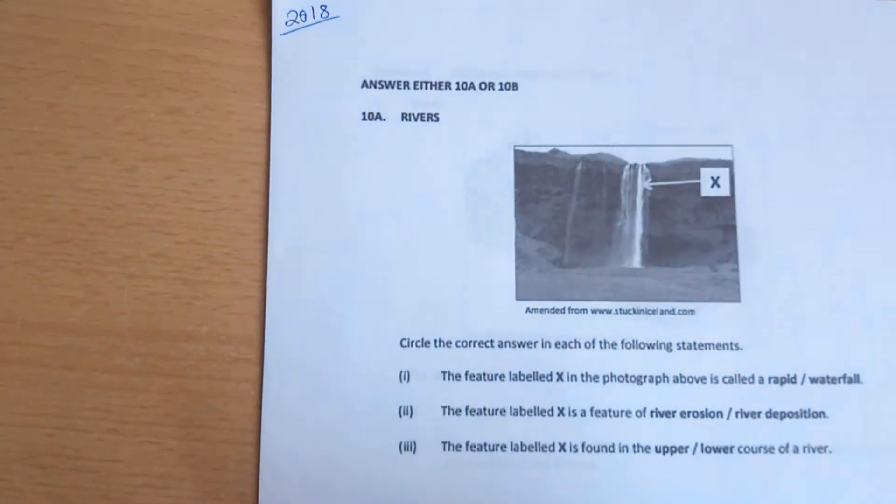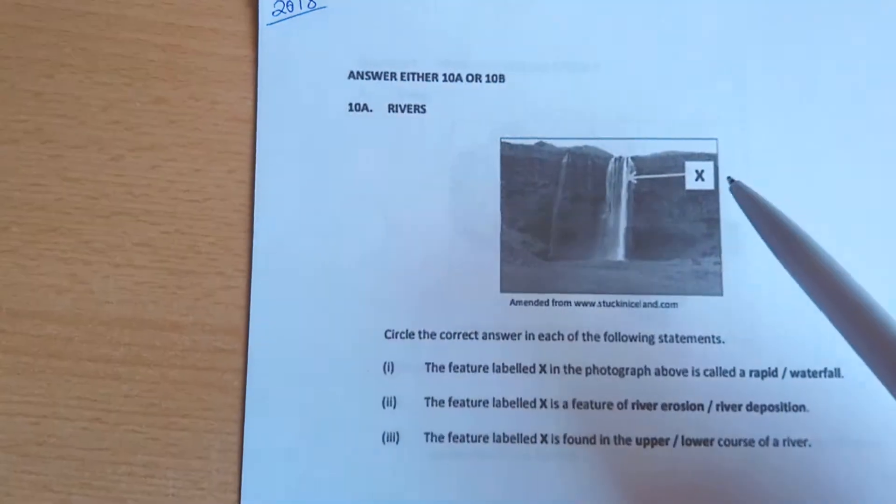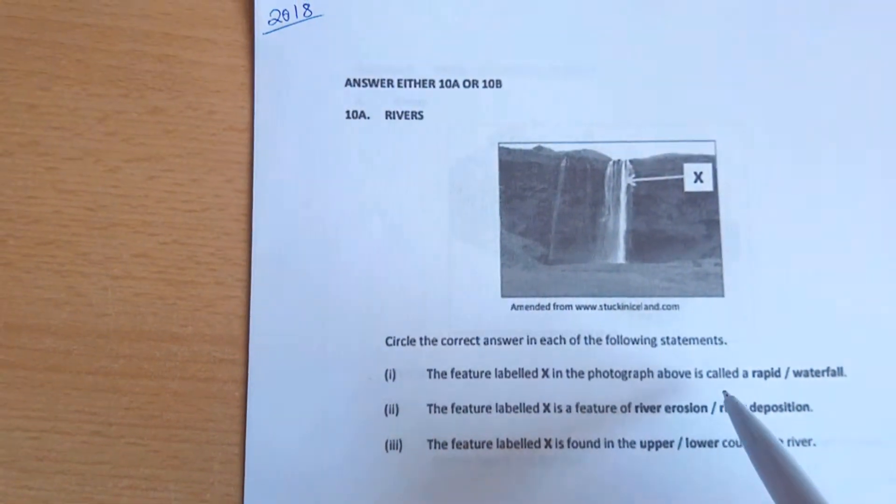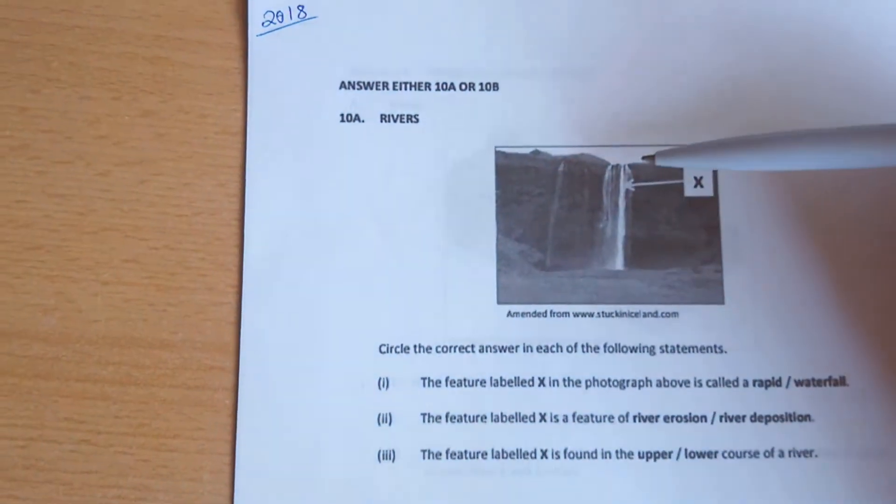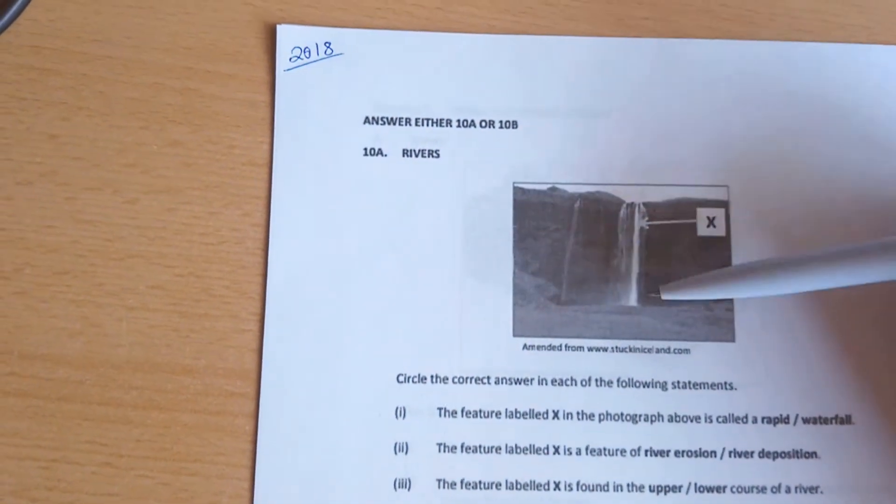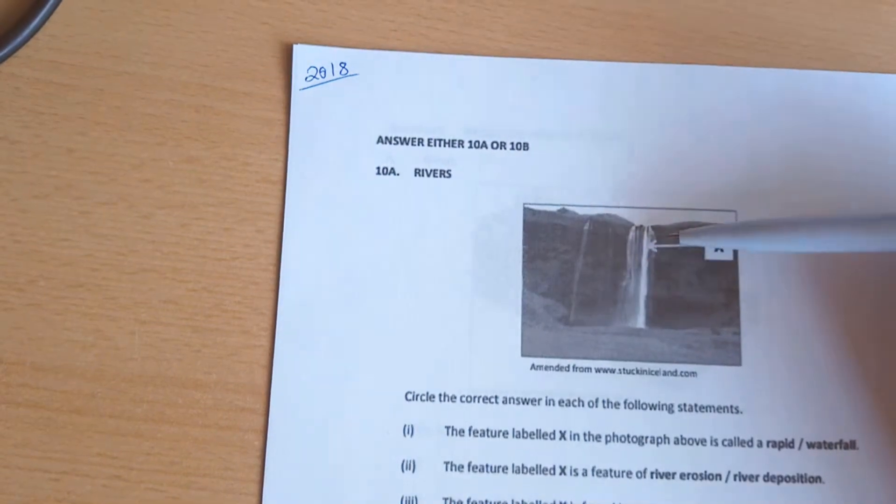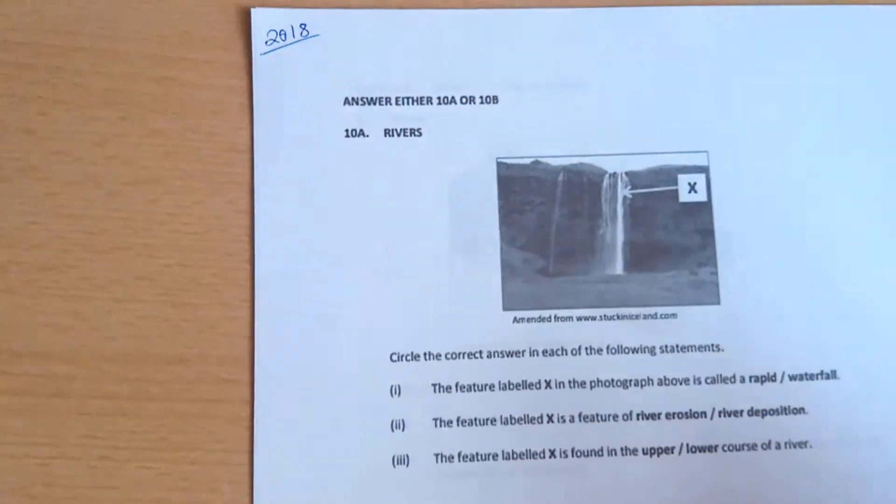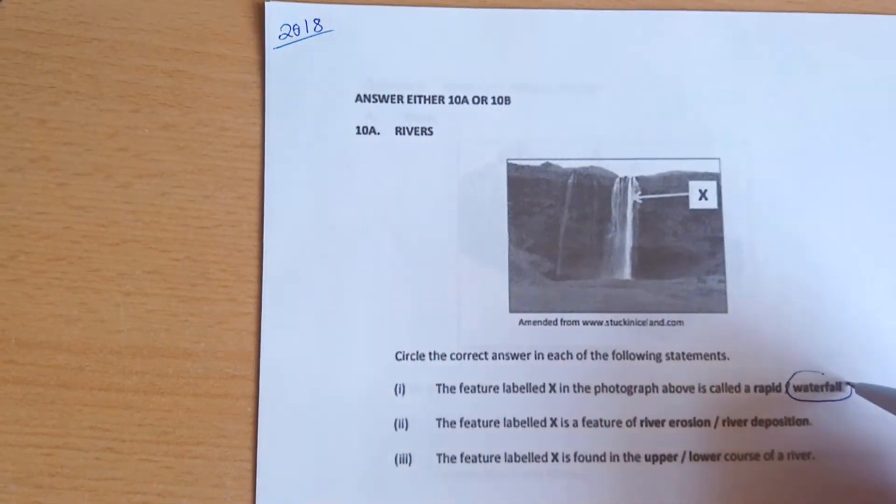The first question asks whether the feature labeled X in the photograph is called a rapid or a waterfall. We can clearly see it's a steep vertical slope with water coming down over, so it's a waterfall.